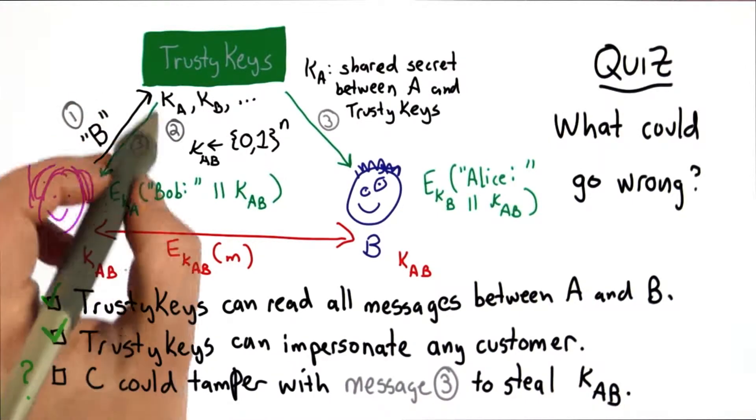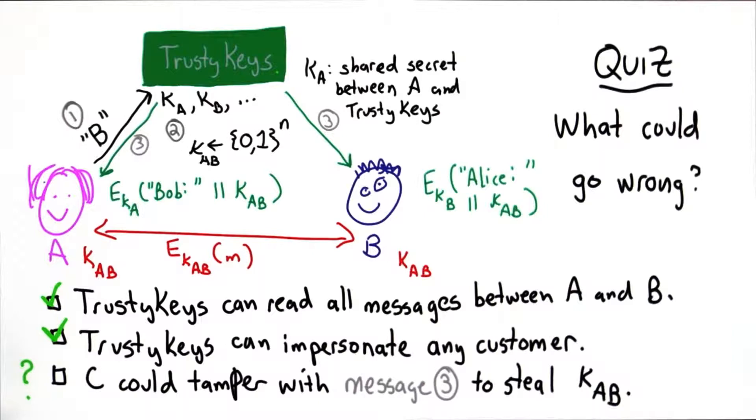Trusty keys can impersonate any customer because it has a key shared with them, can generate a fake channel, make it seem like Alice is talking to Colleen, but pretend to be Colleen in that communication.